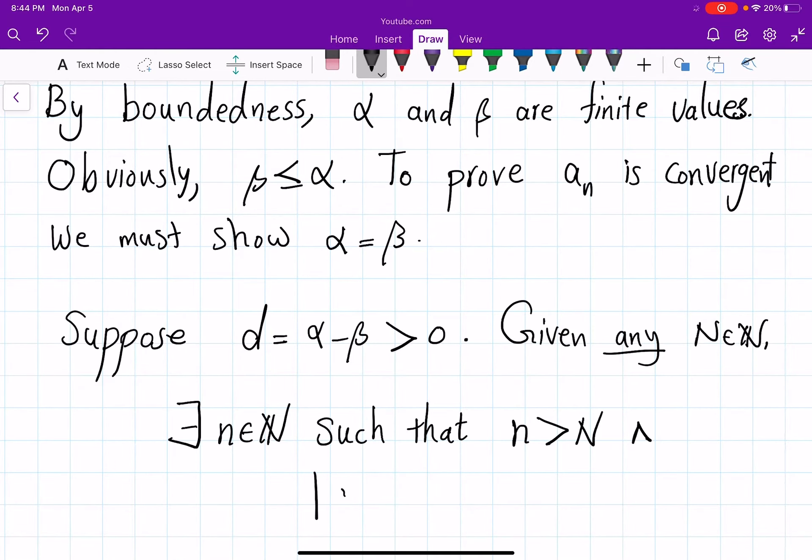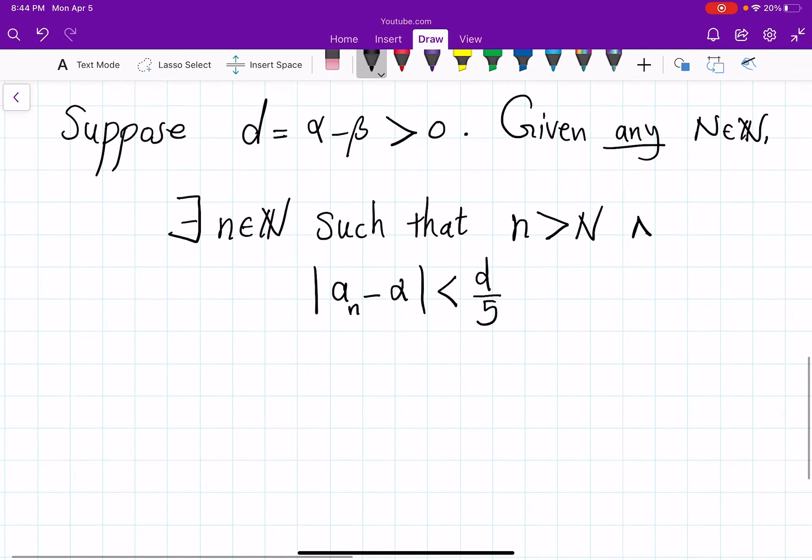n is bigger than N and at the same time the distance of aₙ to α is less than d over 3. So this aₙ is among those indices that visit your limsup α.